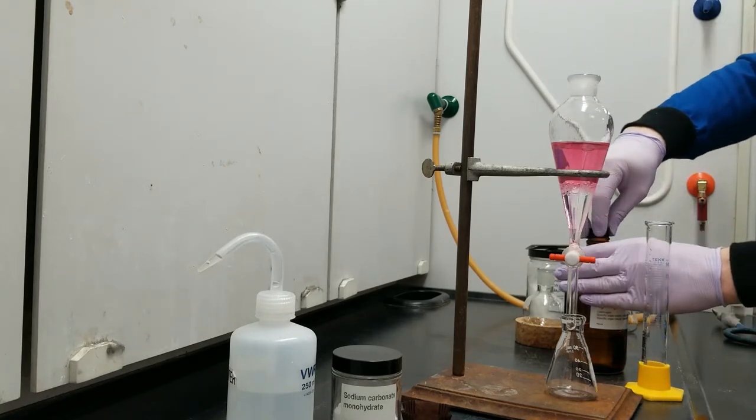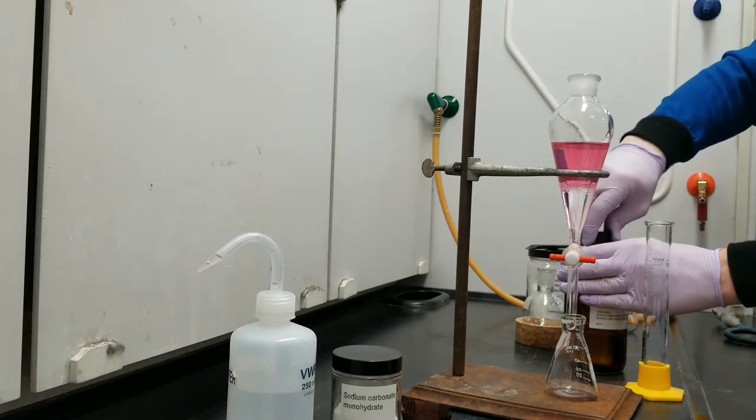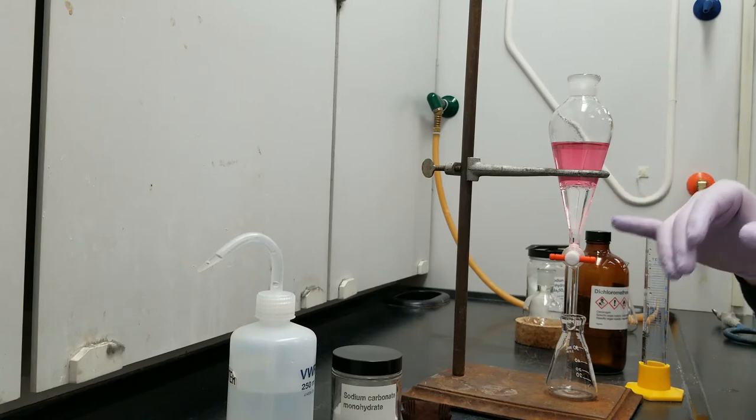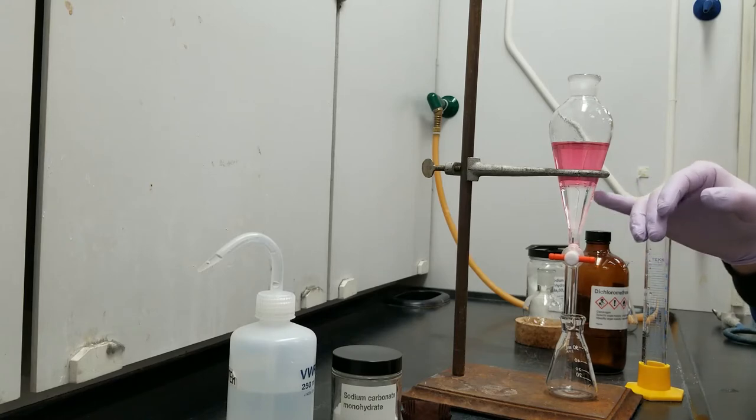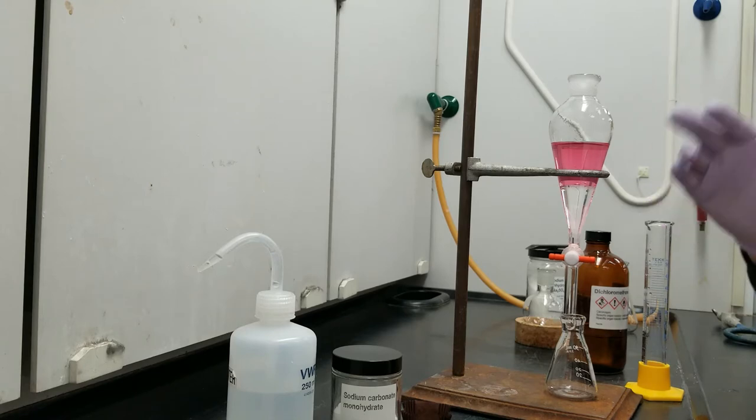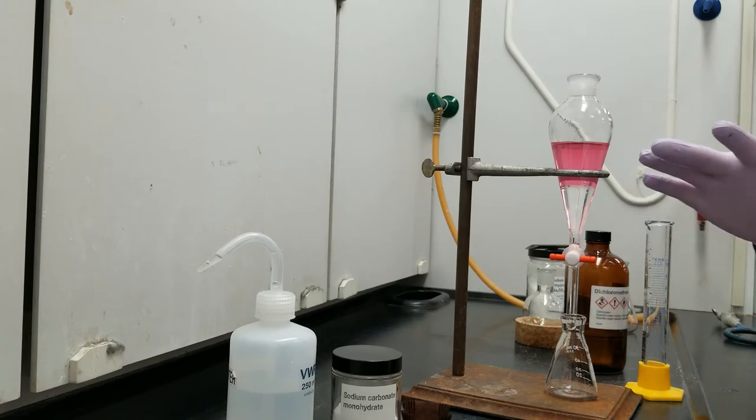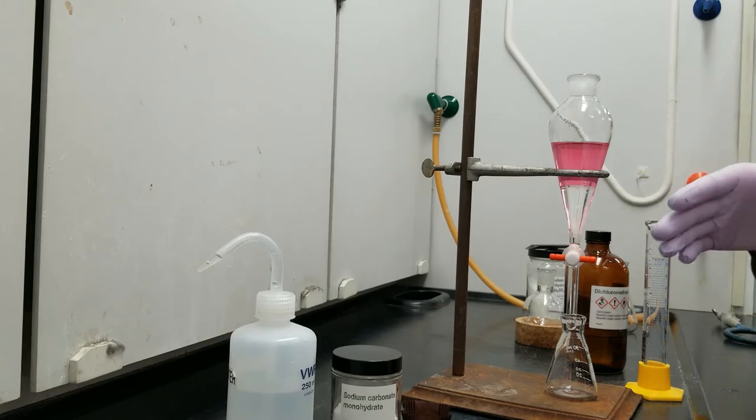And now let's talk about these layers. You can see that the layers have already formed without any agitation. DCM is this clear layer down here at the bottom. And the energy drink, which is mostly water, is this purple layer up here at the top. DCM is at the bottom of the container because it is the more dense liquid. So if you're ever unsure about which layer is which, you can look up the densities. And the more dense liquid is going to be at the bottom.